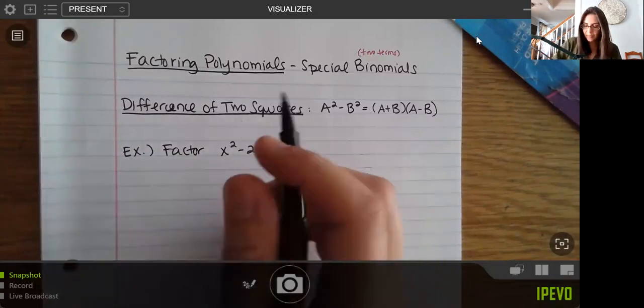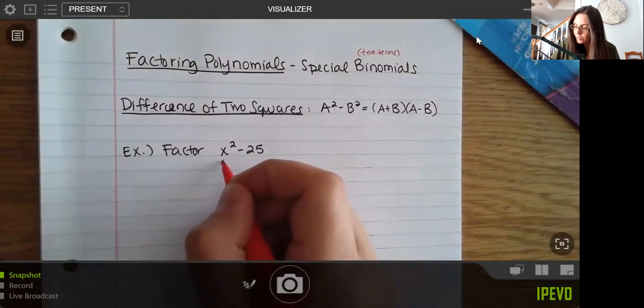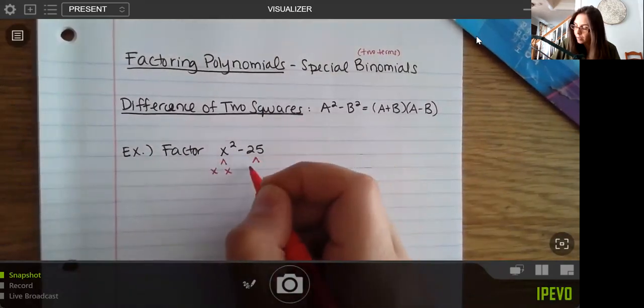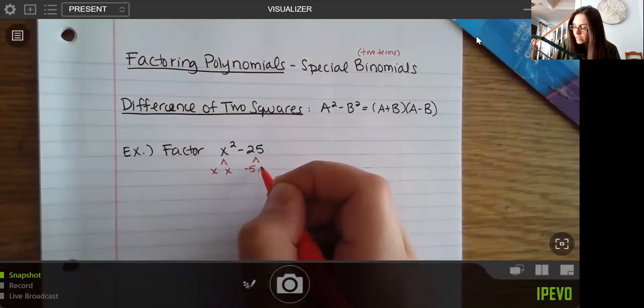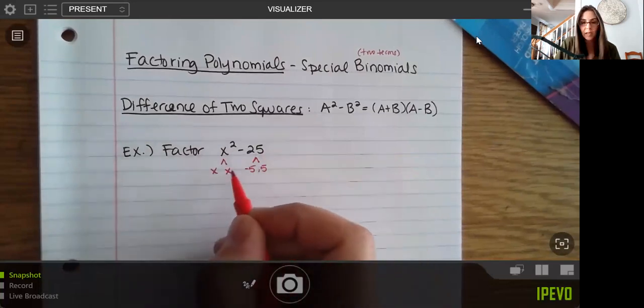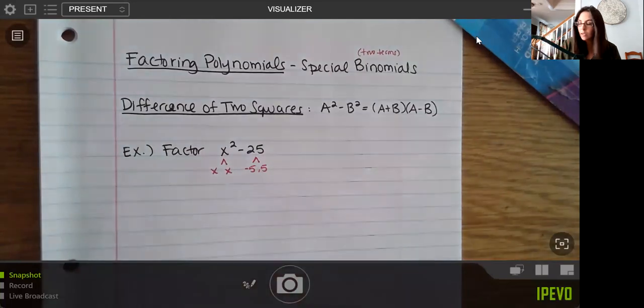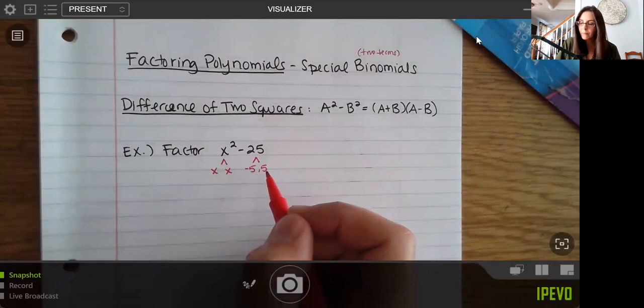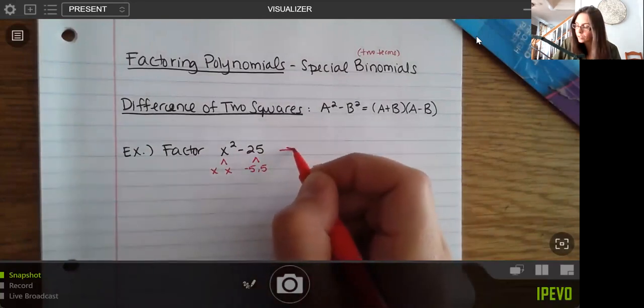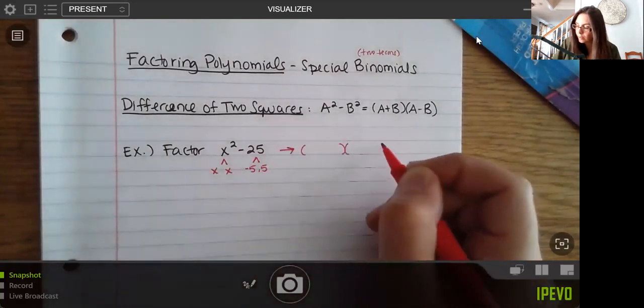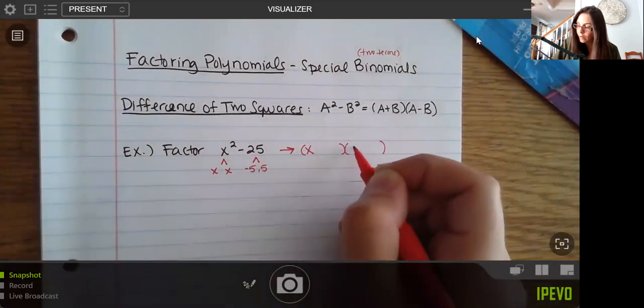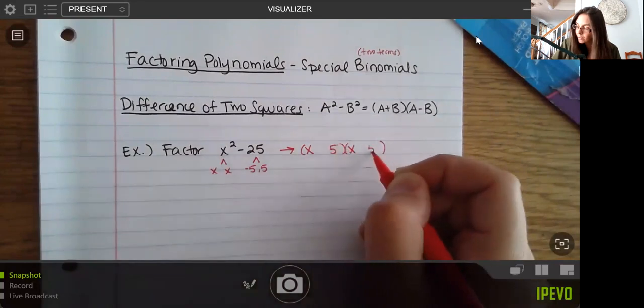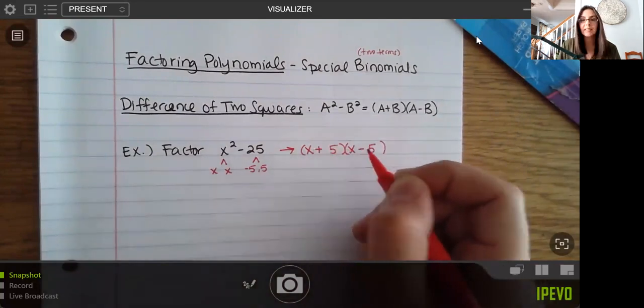So what happens in a special case like this is that when you factor, yes, you can go through trial and error, or yes, you can go through grouping. But what you want to notice here is it's very particular. They have doubles, but the signs are different here. To get negative 25 would be a negative five and a positive five. So the factorization is always going to be pretty straightforward. You're going to take that square root of the first part, the square root of the second part, and you're going to use the opposite signs.